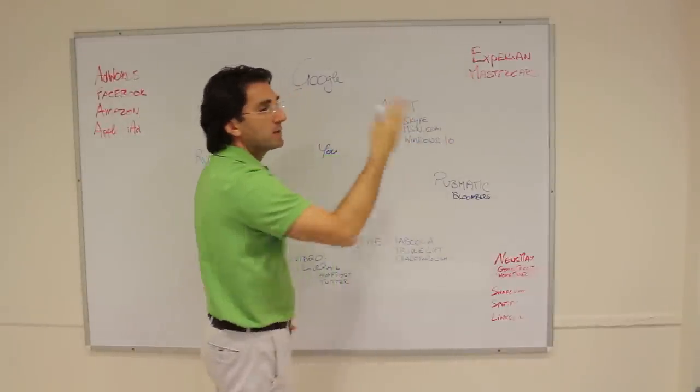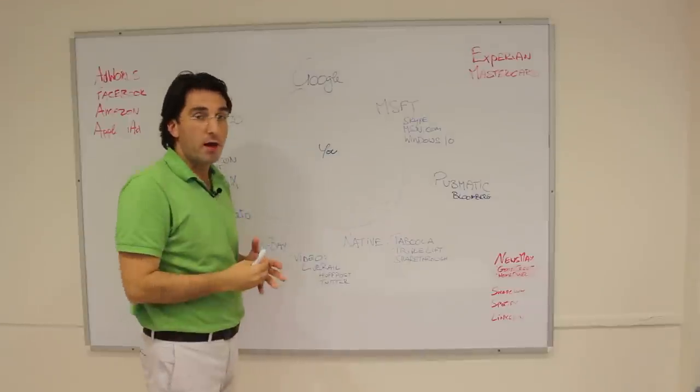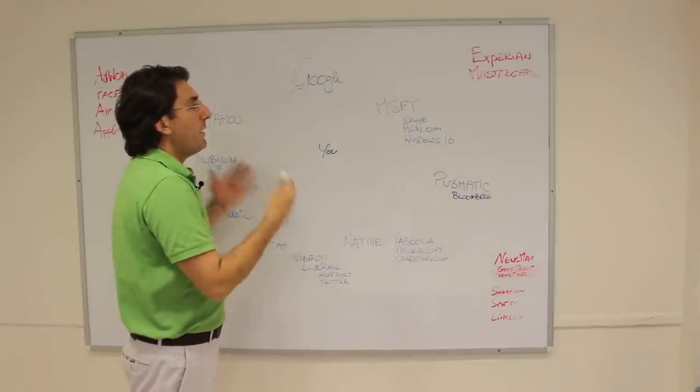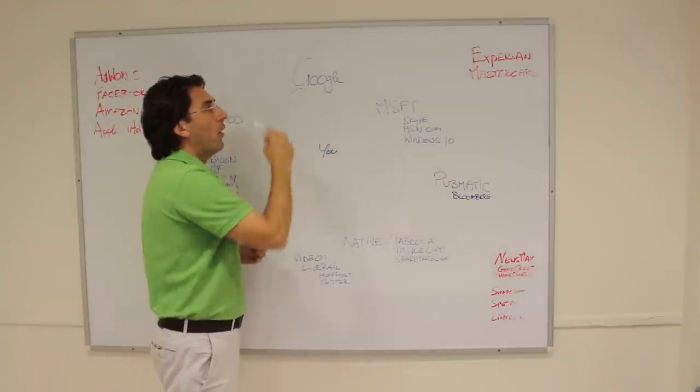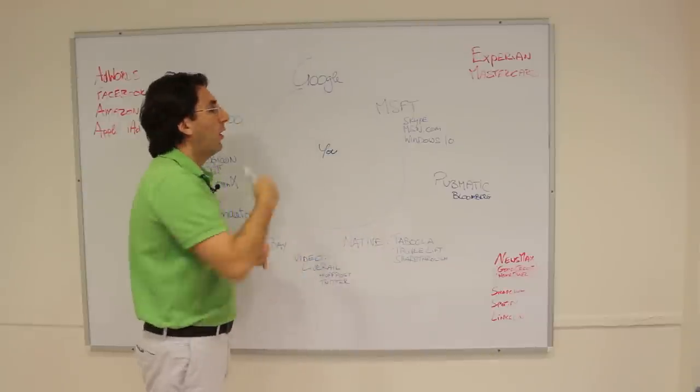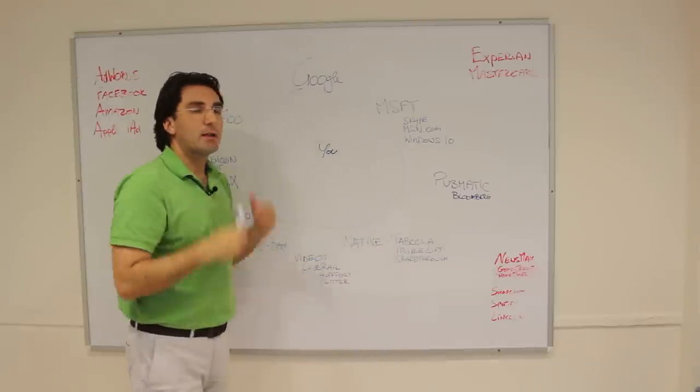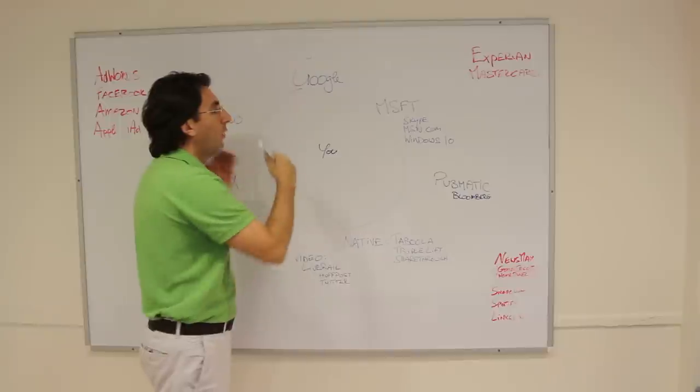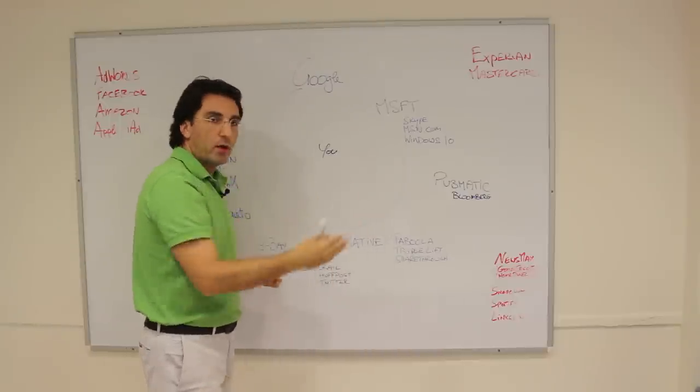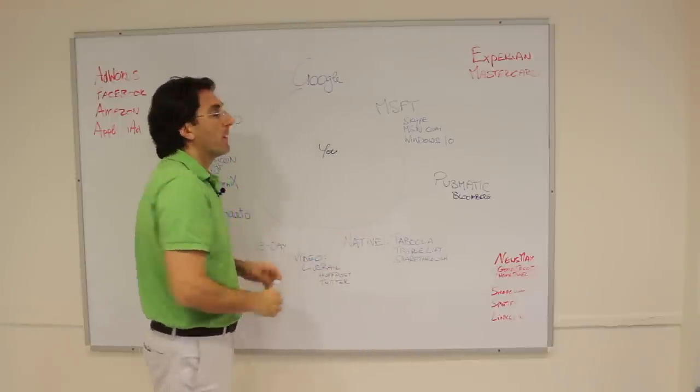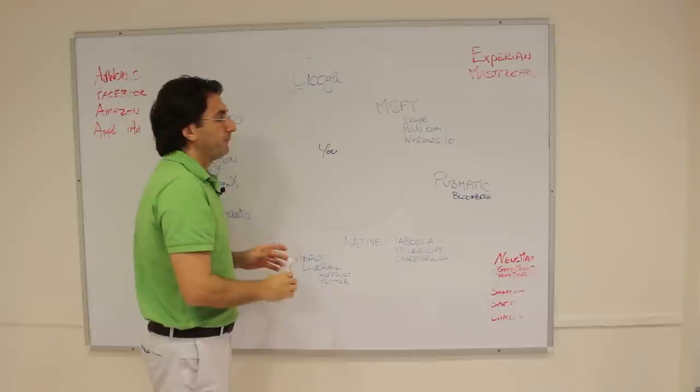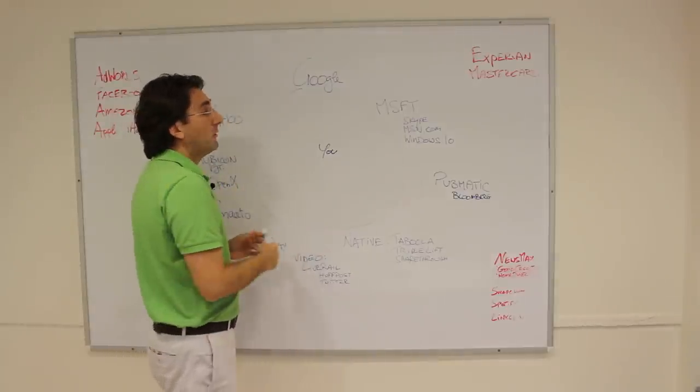such as Experian, MasterCard, and a whole host of other suppliers that enable you to show an ad only when your criteria are met—only show my ad if the person is a homeowner with good credit, only show my ad if whatever criteria you've set. That's another way. A third way is to go